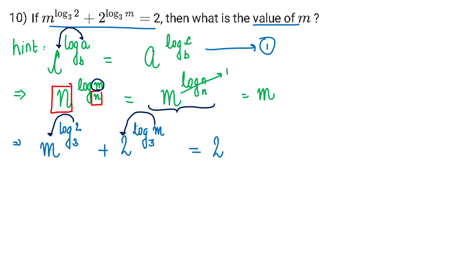We can solve this by analyzing the RHS part. Since we have 2 here, I will work with 2 so that I can compare and find the value of m. So it can be written as 2 to the power log m base 3 plus 2 to the power log m base 3.